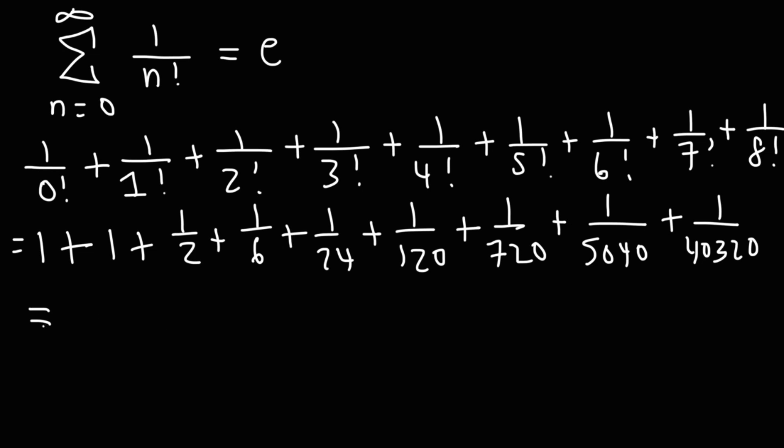So this is equal to 2.7182787, which is approximately e. Now, granted, if you keep adding more numbers like plus 1 over 9 factorial plus 1 over 10 factorial, it's going to get closer and closer to e. But as you go to infinity, you'll get the value of e.